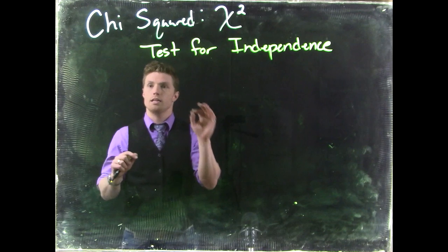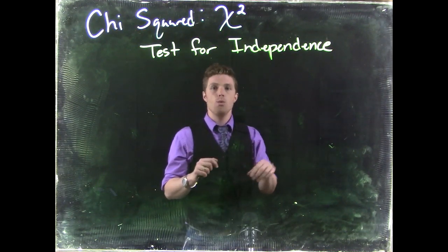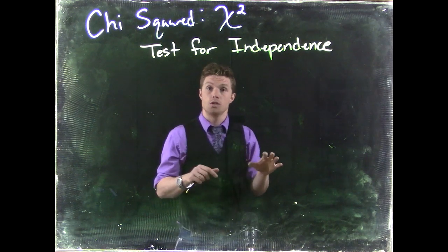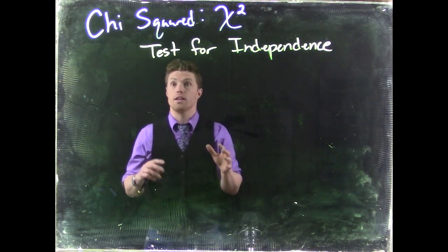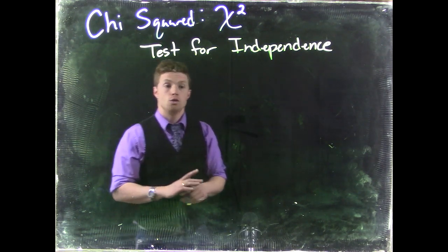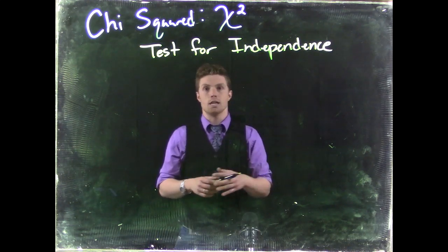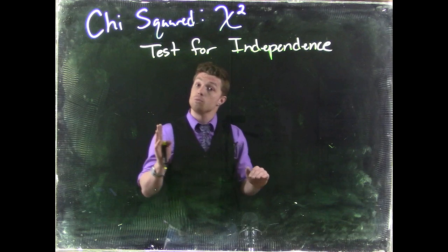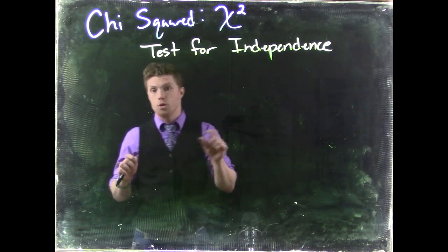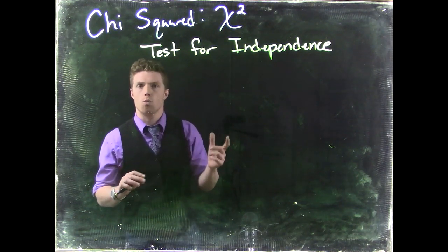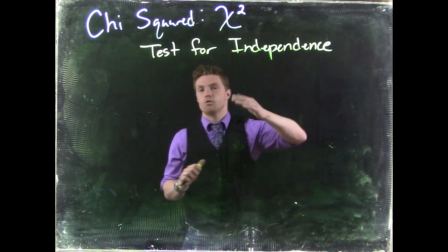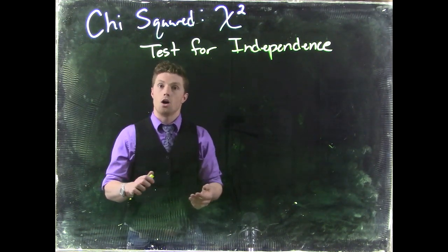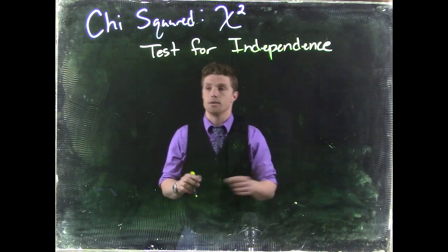For the test for independence, we want to see if two categorical variables are in fact correlated or if they are independent from one another. Just like we did in regression analysis, where we tried to determine whether or not two numerical pieces of data were related and associated a slope with them — in the test for independence, we're trying to see if two pieces of categorical data are correlated with one another.